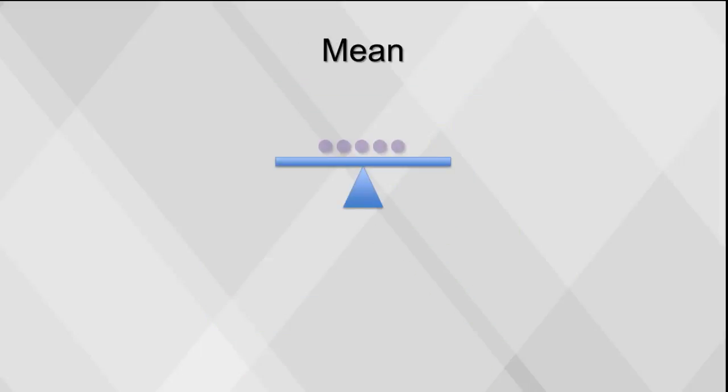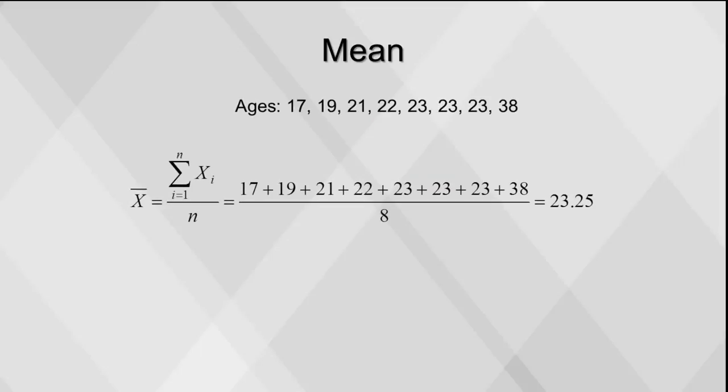The mean is the average or balancing point. To find the mean, find the sum of all the values divided by the sample size. Here's a simple example of calculating the mean of the age of several participants in a study. The sigma is the sum, and the x-bar is the sample mean. After adding the values together and dividing by the number of values, 8, we arrive at our mean, 23.25.